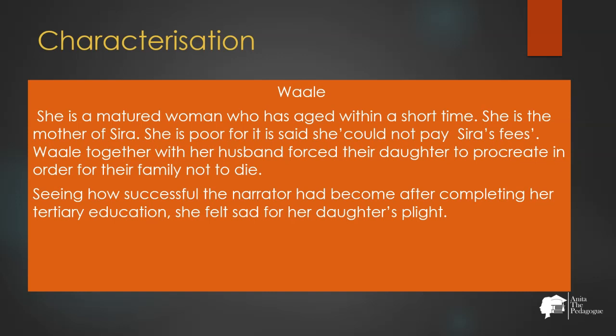The narrator's mother is very proud that her daughter has successfully completed higher education and returned to help her village. She plays a part in training the narrator not to be a critical thinker, telling her to follow the customs and culture of Dukana religiously. She is a good mother who promoted her daughter's education, especially in a village like Dukana where women are oppressed. Wali is a mature woman who has aged quickly. She is the mother of Sira and is poor, having been unable to pay Sira's school fees, and together with her husband forced their daughter to procreate for the continuity of their family.